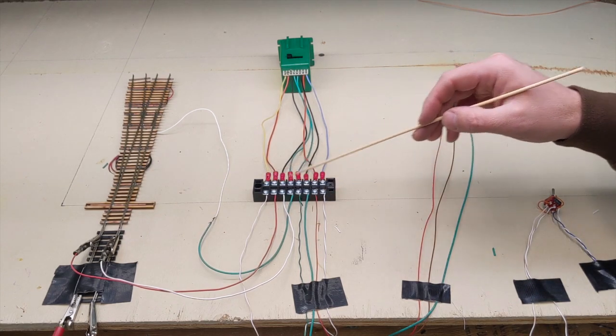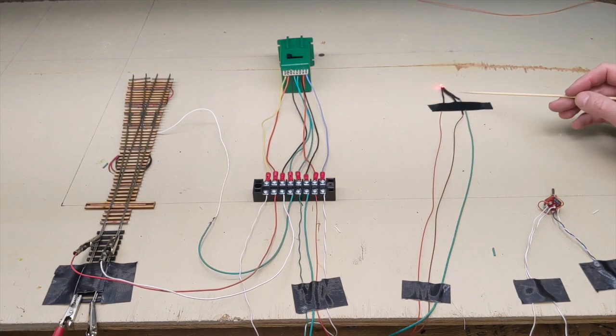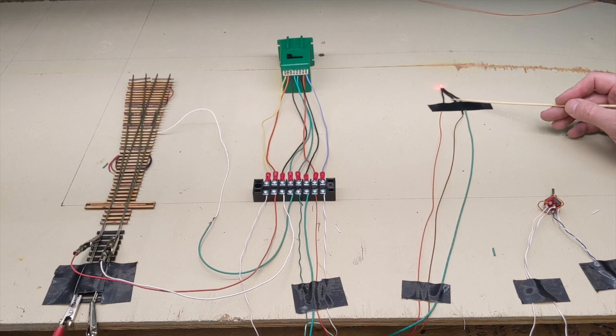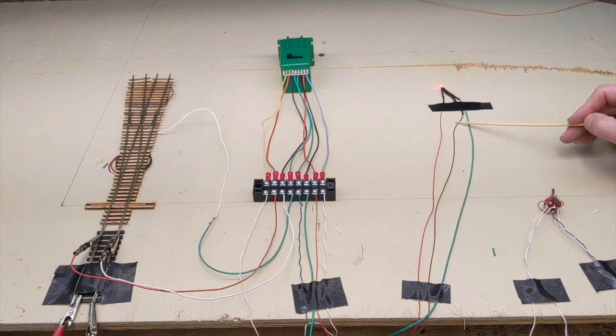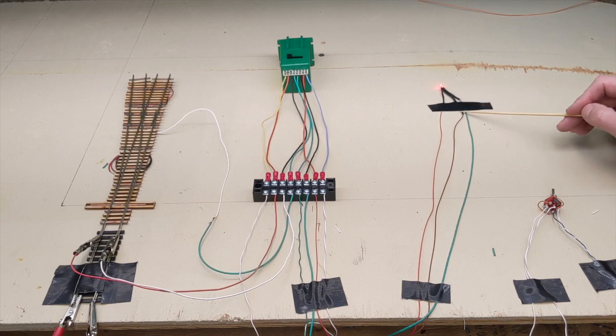After that's hooked up, I take this, which is my bi-color LED green and red. So I have my green and my red here, and this is my common. I have a 470 ohm resistor hooked up to this.